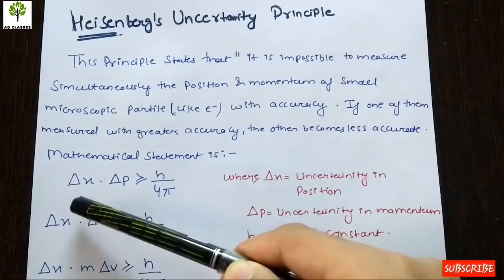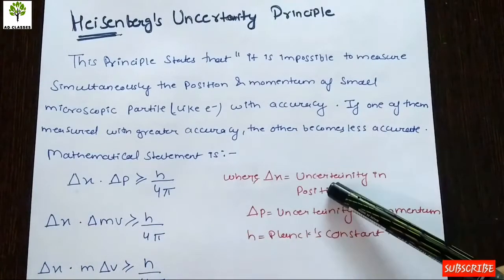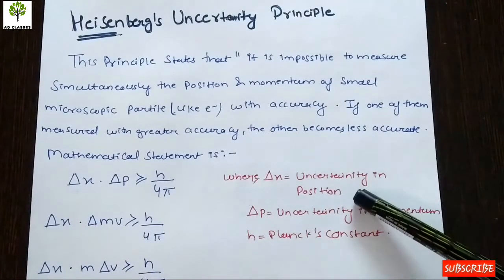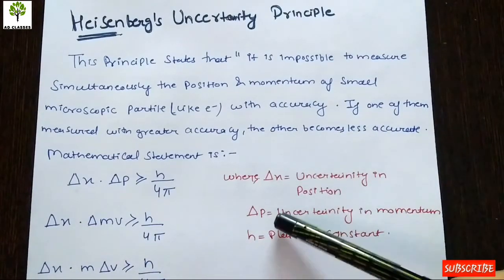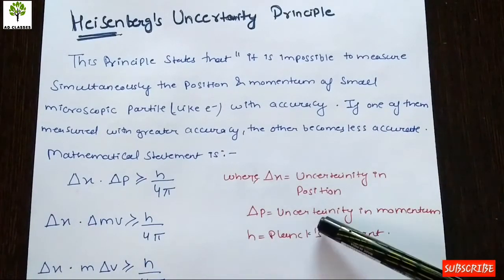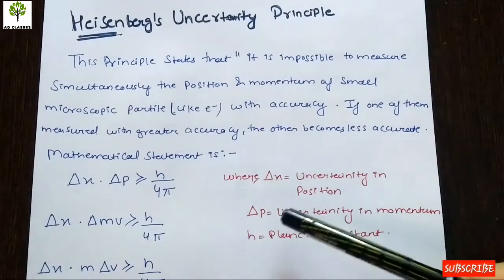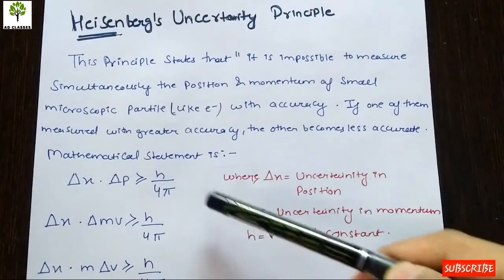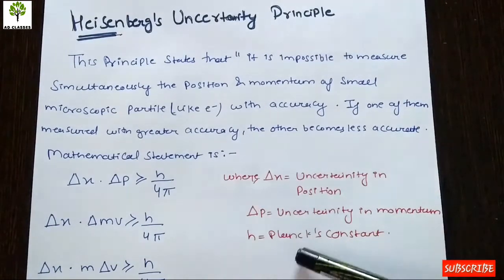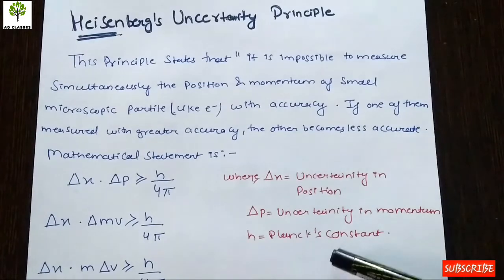Delta x is the uncertainty in position, and delta p is the uncertainty in momentum — because p is the symbol for momentum. And h is the symbol for Planck's constant.